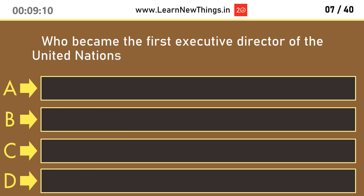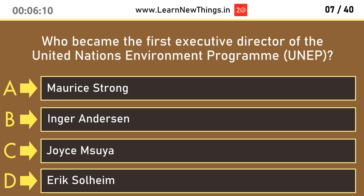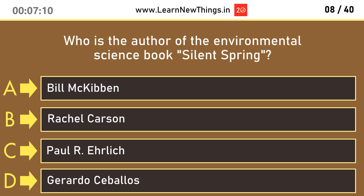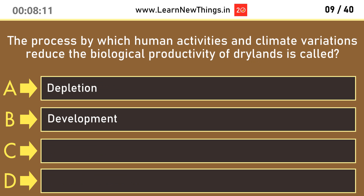Who became the first executive director of the United Nations Environment Program? Maurice Strong. Who is the author of the environmental science book Silent Spring? Rachel Carson. The process by which human activities and climate variations reduce the biological productivity of dry lands is called Desertification.